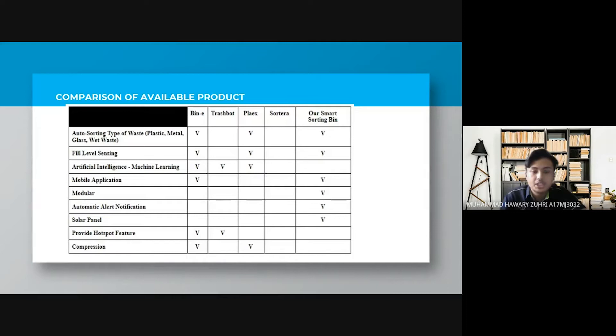For AI or machine learning, it's only for BinE, TrashBot and Blabox. Mobile application for BinE and our smart sorting bin. Modular is our smart sorting bin. Automatic alert notification for our smart sorting bin. Solar panel is only for our smart sorting bin and provide hotspot feature is for BinE and TrashBot and compression is for BinE and Blabox.